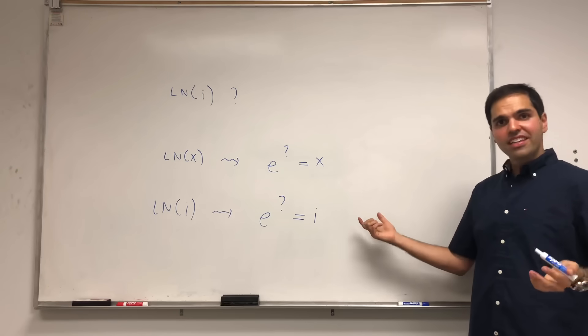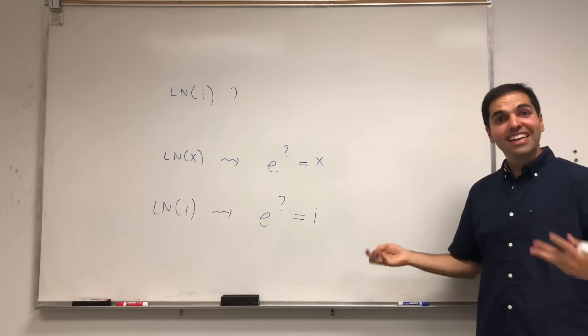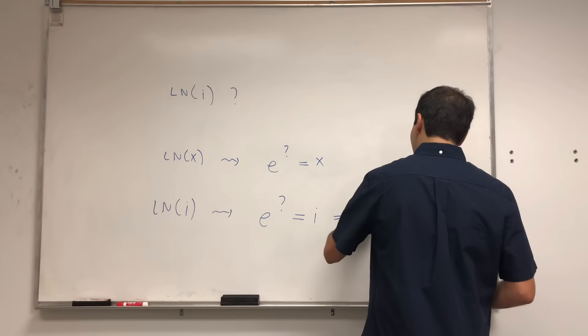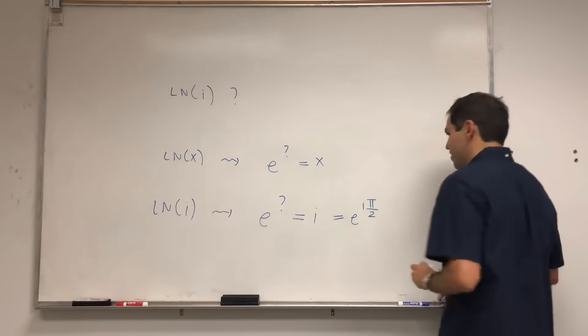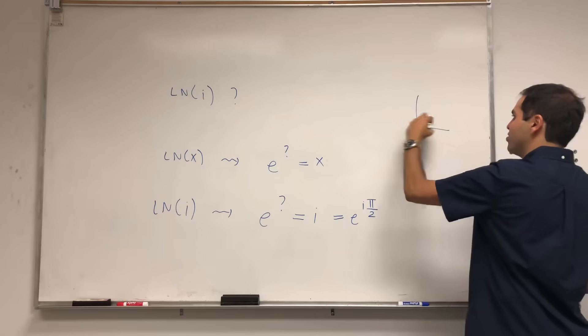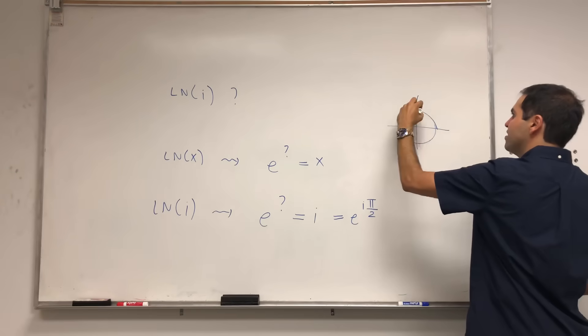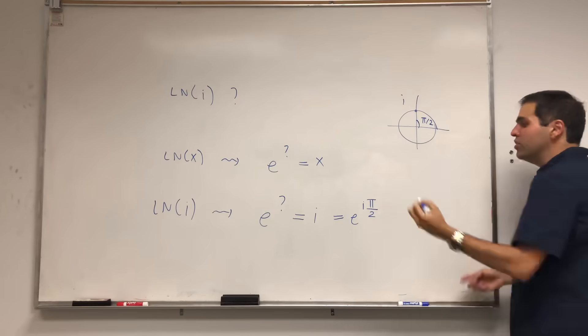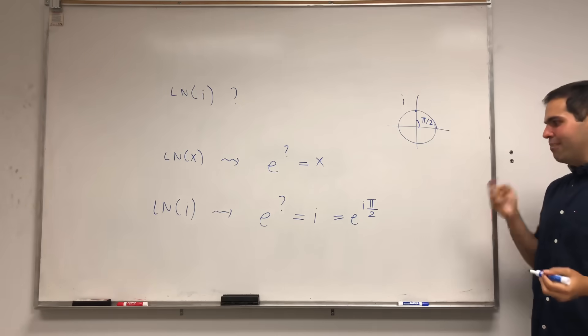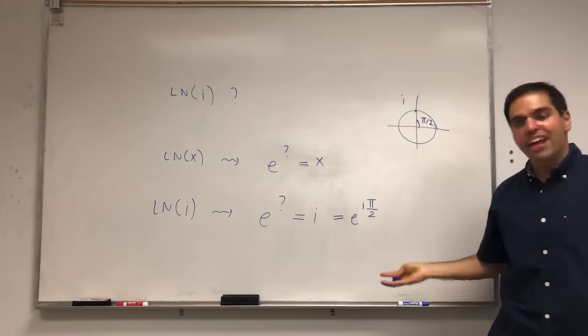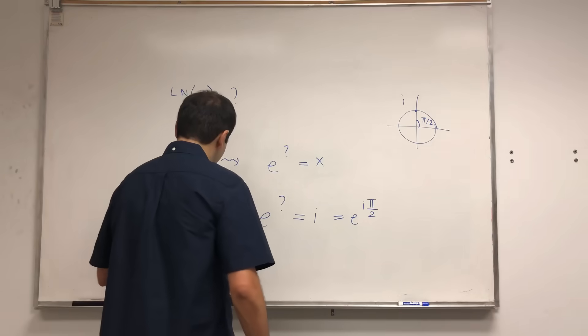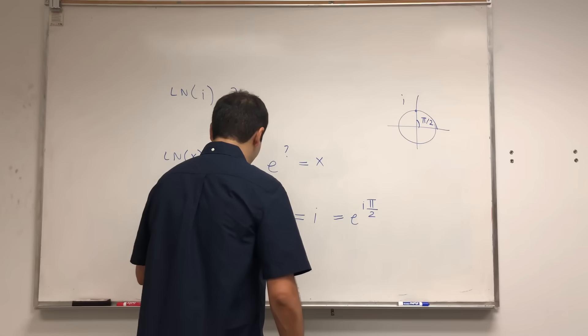And the nice thing is, we do know what i is in terms of exponentials. i is just e^(iπ/2). Because again, in this trig circle, this is i, and it corresponds to an angle of π/2, so it has to be e^(iπ/2). And therefore, well, our guess would be ln of i should be iπ/2.